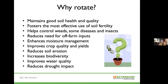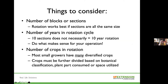Rotation helps us use our fertilizers most effectively — which is really important in a year like this when every fertilizer is very expensive. It also helps with our IPM program: rotation is going to help with your weeds, diseases, and insects, and can reduce the need for off-farm inputs. It helps with moisture management, can improve quality and yield, and helps with erosion, biodiversity, and water.